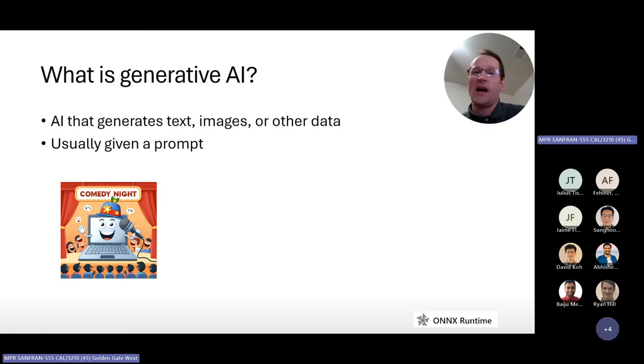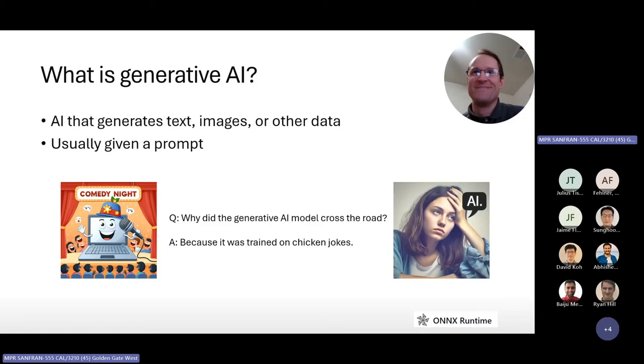And then I decided to have it also write a joke. So the prompt I gave it was, write a joke about generative AI, and it came up with this. Why did the generative AI model cross the road? The answer: because it was trained on chicken jokes. And then I also had it draw a human groaning at the AI joke.